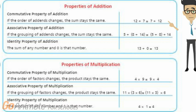Commutative just means that the order of the numbers change without changing the answer. In this example, 12 plus 7 is exactly the same as 7 plus 12.